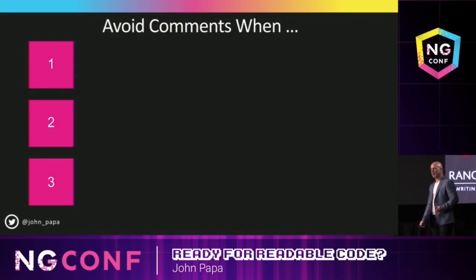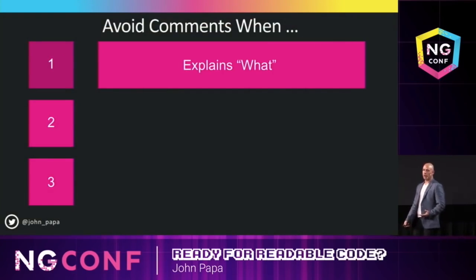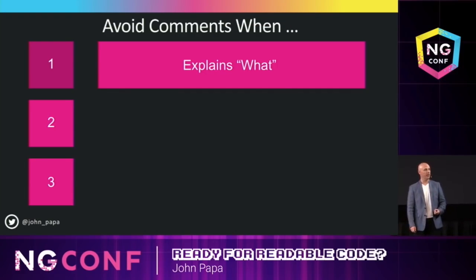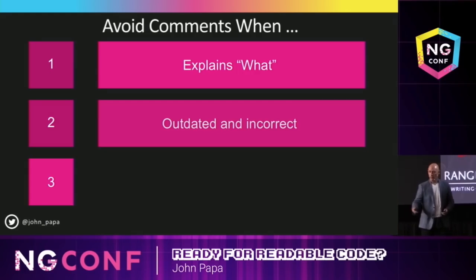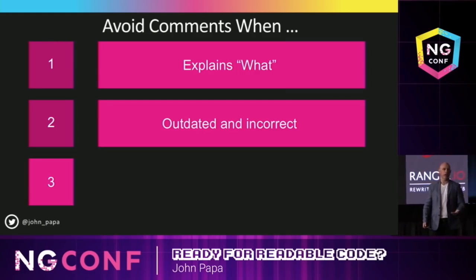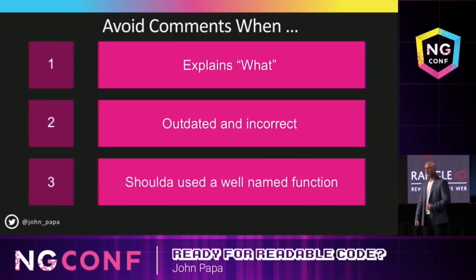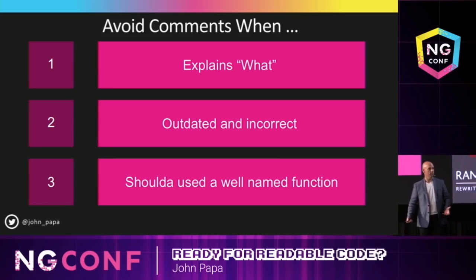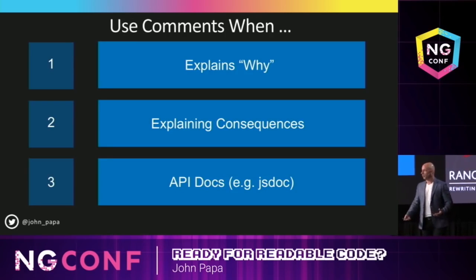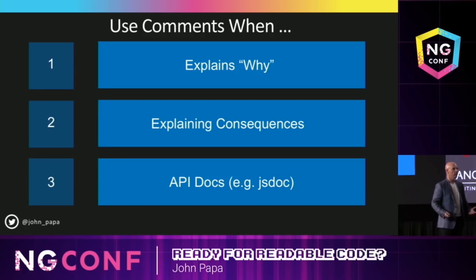So when do you avoid comments? If you're explaining what the code does — here's the beginning of the if, here's the end of the if — thank you, but no. Outdated and incorrect comments are easy to misunderstand. We don't want old comments; they're actually worse than having no comments because they mislead you. Or you should've used some kind of a well-named function or variable. Comments can be helpful, yes — I'm not saying don't comment at all. Just think about where you comment, how it can be helpful, and who's going to update that.